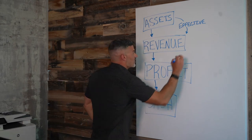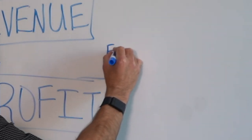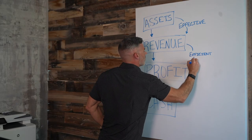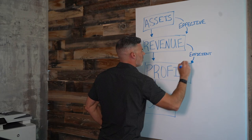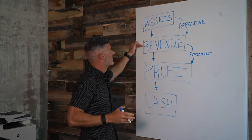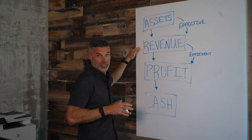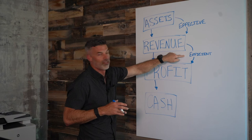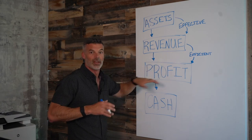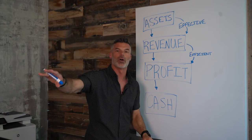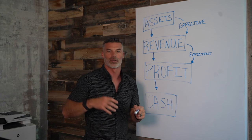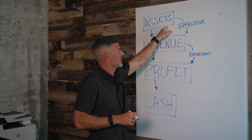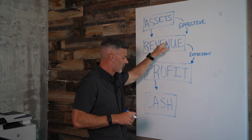The second measure is how efficient you are from revenue to profit. This is about spending or investing the minimal amount to deliver your product, service, or experience to the marketplace. The less you have to spend in resources, the more efficient you are in bringing down to profit. This is the true measure of how good you are as a businessperson — not your top-line revenue, not your $2 million, $10 million, or $20 million company. Simply: how effective are you at turning assets into revenue, and how efficient at turning revenue into profit?